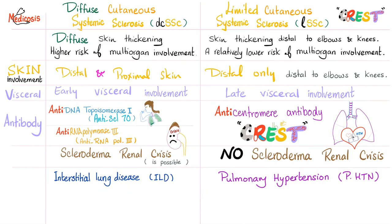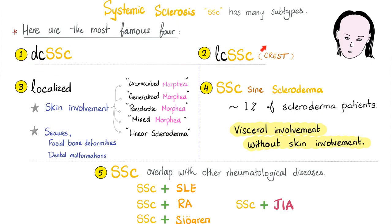CREST syndrome loves pulmonary hypertension. The localized skin involvement subtypes include circumscribed morphea, generalized morphea, pan-sclerotic morphea, mixed morphea, and linear scleroderma — mostly a dermatology topic. Systemic sclerosis sine scleroderma has visceral involvement without skin involvement, in only 1% of patients. Scleroderma can also overlap with other diseases: systemic sclerosis plus lupus, systemic sclerosis plus rheumatoid arthritis, or systemic sclerosis plus Sjögren's.